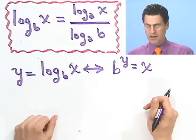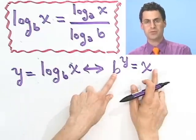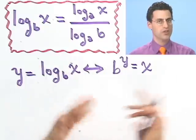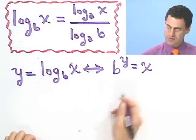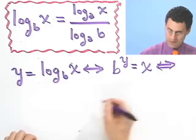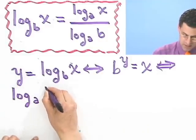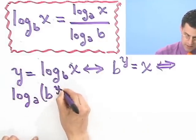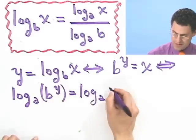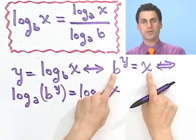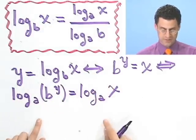So y is the exponent I have to raise b to in order to get x. So that means b to the y equals x. These two statements are identical. Great. Now what I'll do is take the logarithm with respect to base a of both sides. If two numbers are equal, their logarithms are equal. Logging both sides is completely okay. So if I take the logarithm of both sides, that would mean log base a of b to the y would equal log base a of x.